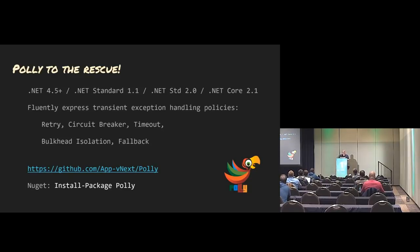So here comes Polly. It's .NET 4.5, also .NET Standard 1.1 and Standard 2.0. Standard 1.1 means it's really compatible with everything — the numbers of standard, as they go up, get less compatible. Also, it's in .NET Core 2.1 — it's actually in the framework. We'll talk about that in a minute.